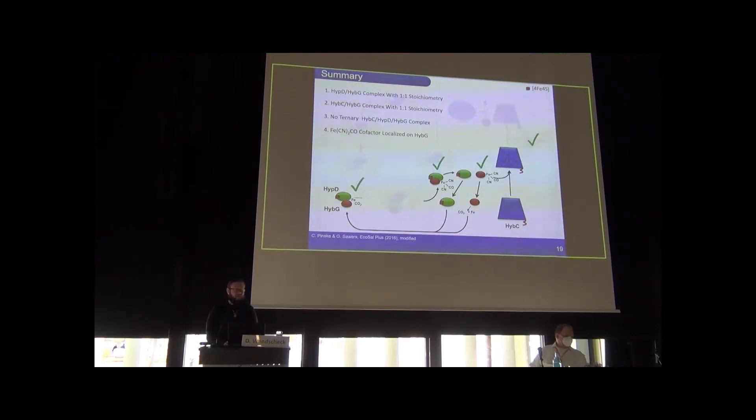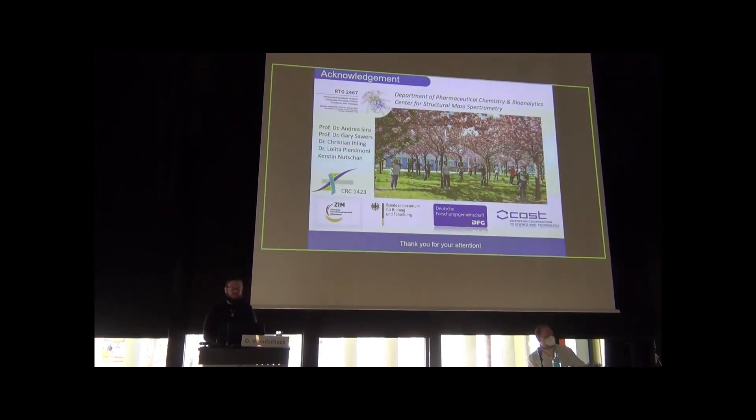This is the state where at the moment we were able to verify in this whole maturation cycle the existence of the HIP-D HIP-G complex. We were able to show that there is a shuttling of the cofactor which is produced at the HIP-G HIP-D complex. It's still confusing for me, I've been working with it for five years now. We see that the cofactor is transferred with HIP-G to HIP-C. I want to thank you for your attention.